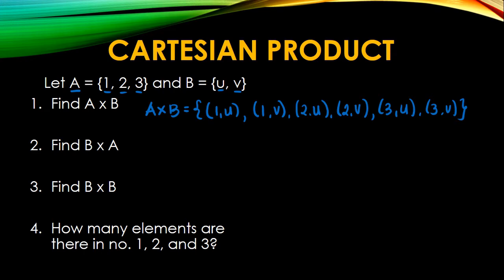For the second one, B cross A. So all we have to do here is to, again, partner them. So the element in B goes first. So we have here U1 and then U2, U3. Next is we have the V, V1, V2, and V3. So that's the Cartesian product class.